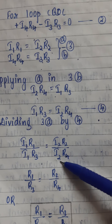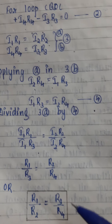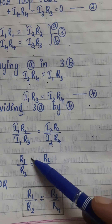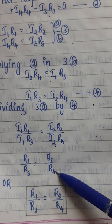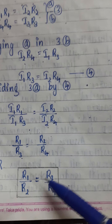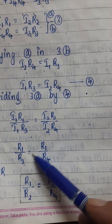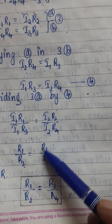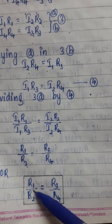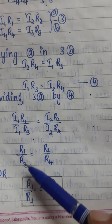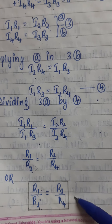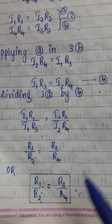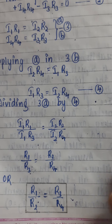After cancellation of i1 and i2, we get R1/R3 = R2/R4. Cross-multiplying, this gives R1/R2 = R3/R4. This is known as the balance condition of the Wheatstone Bridge.